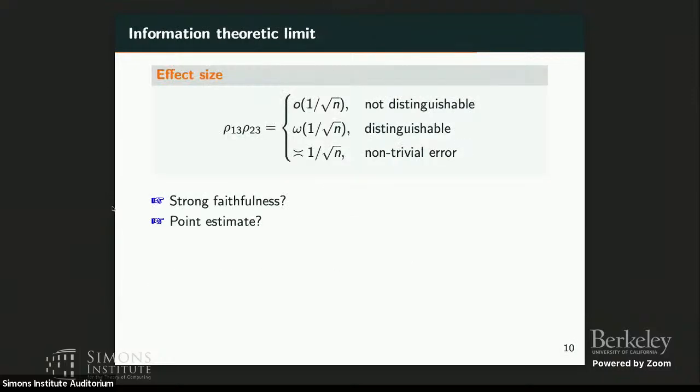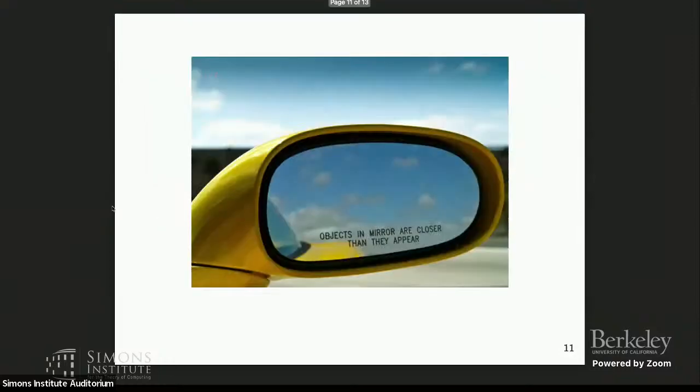Right, you still cannot differentiate between these two models, even if you assume the type of strong faithfulness that seems to bound every ρ. Okay, so this is a bit like, even if you think all the effect sizes are strong, but the models can be actually quite close to each other in this KL divergence sense.